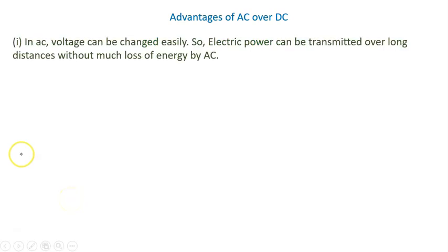Advantage of AC over DC: In AC, voltage can be changed easily, so electric power can be transmitted over long distances without much loss of energy by alternating current.